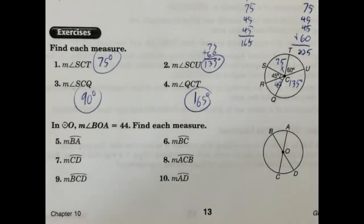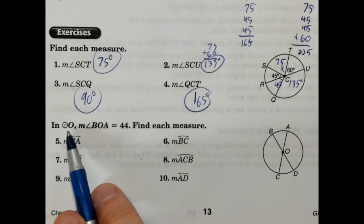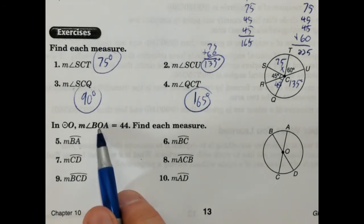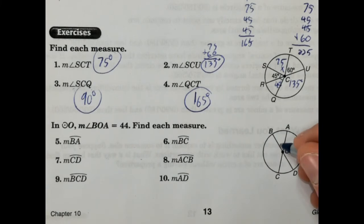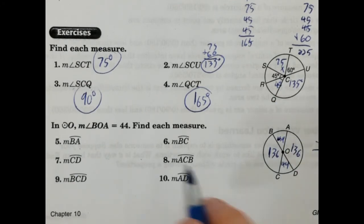Now we're going to find the measure of the arcs. Remember, the arcs actually correspond to the central angle that is associated with it. So we're told in circle O, measure of angle BOA is 44. So BOA is this one. So this is 44 degrees. That means this is 44 degrees because those are vertical angles. And we know that these two angles would be supplementary. So 180 minus 44 is 136 degrees. So we have all the important central angles.